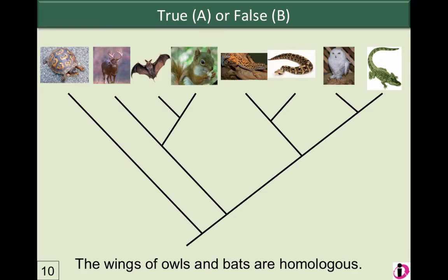I'm going to give you a true/false question to do on your own. The question is: the wings of owls and bats are homologous — that is, they arose due to a shared ancestor having wings. If you think that's the case, indicate true. If you think the wings arose due to convergent evolution and are analogous structures, indicate false. To help answer this, go back and look at how we analyzed the appearance of eyes throughout evolution. I'll tell you the answer in class tomorrow.